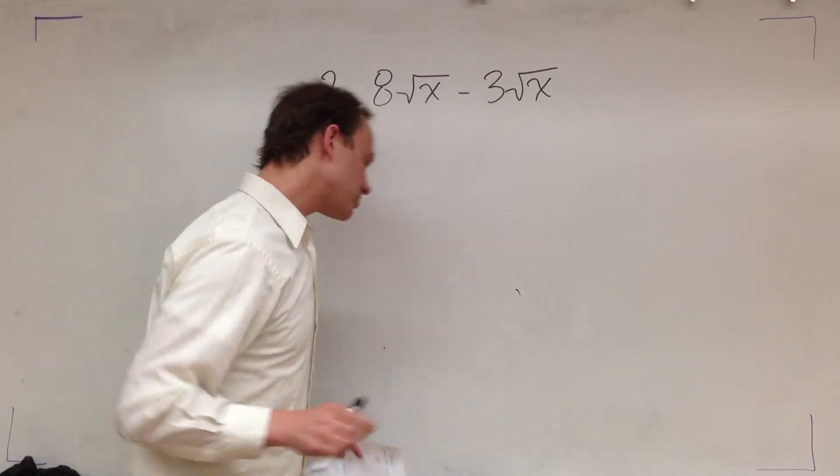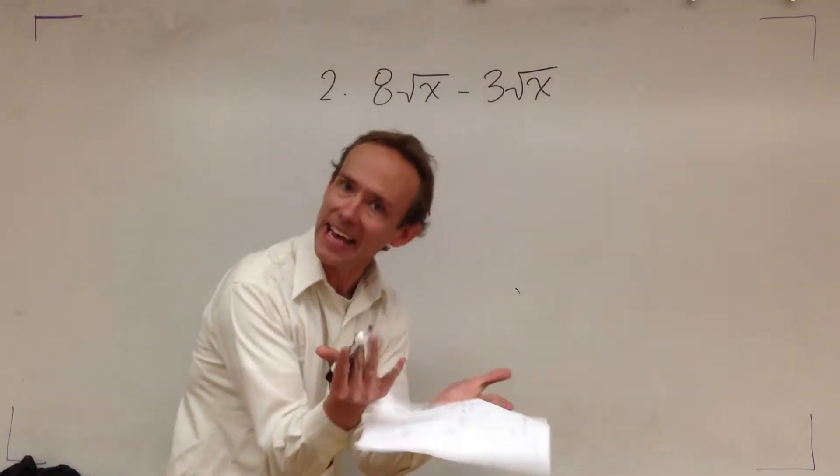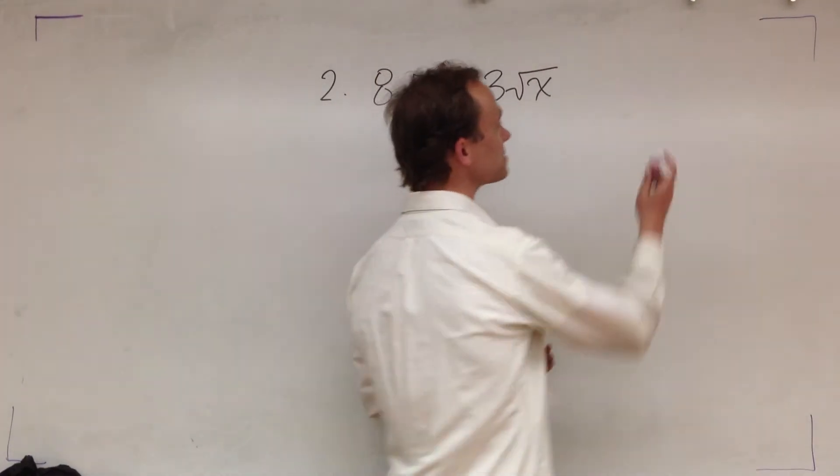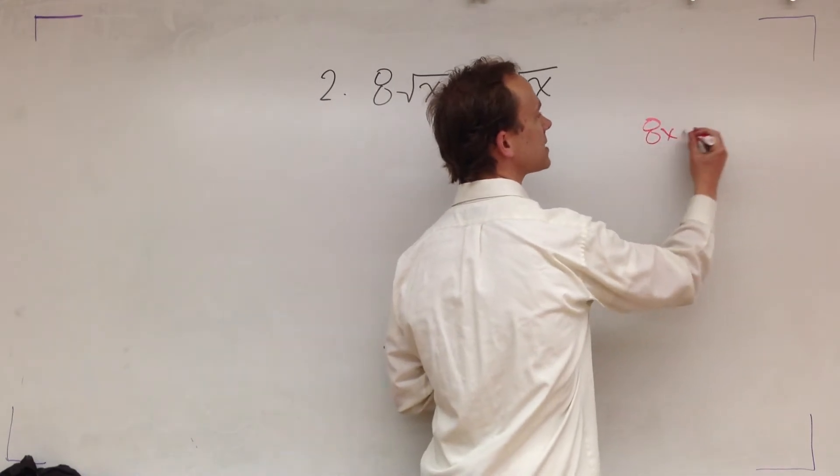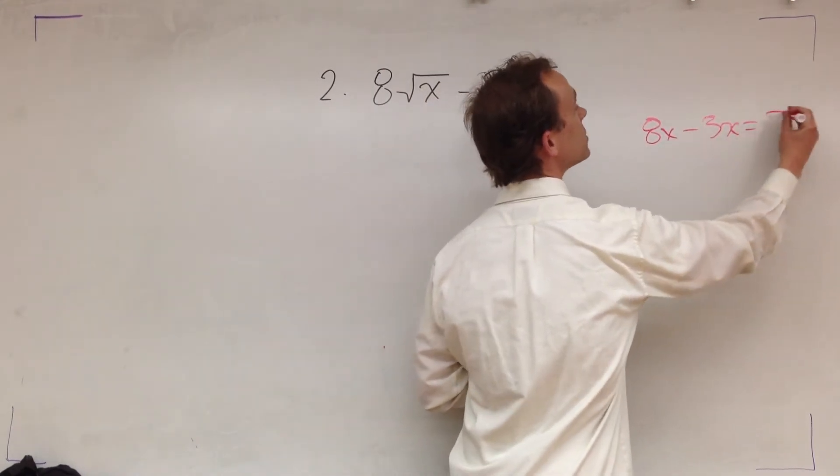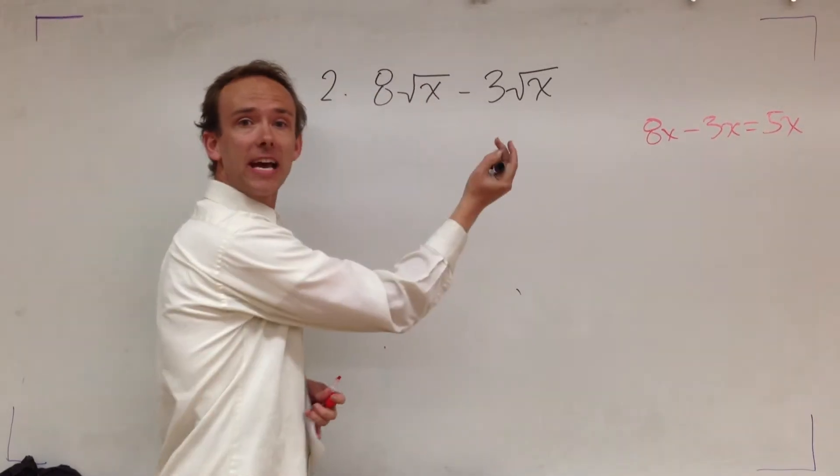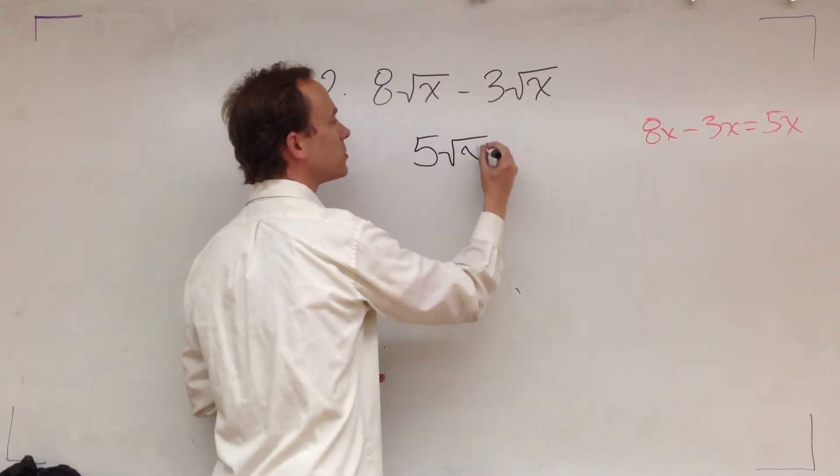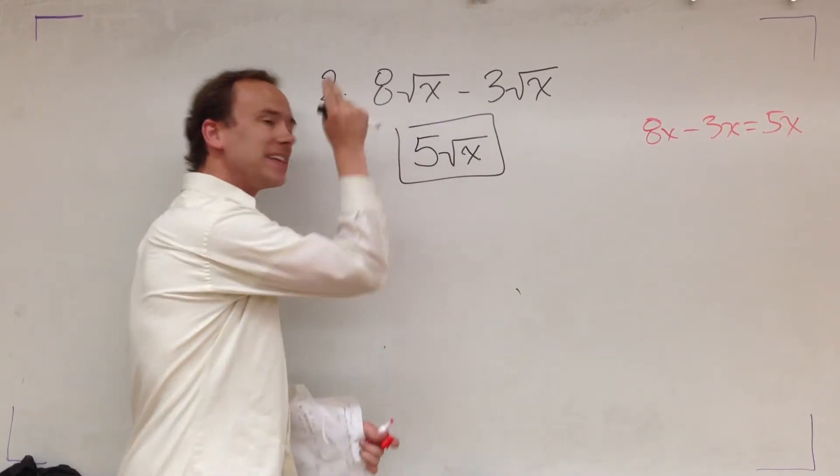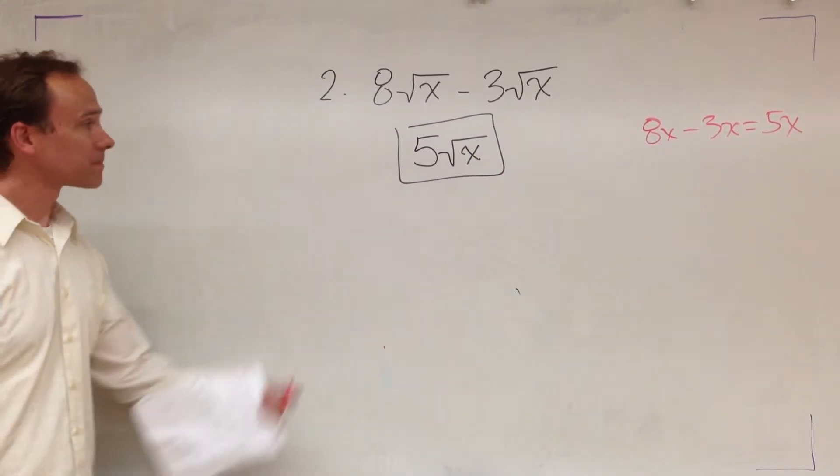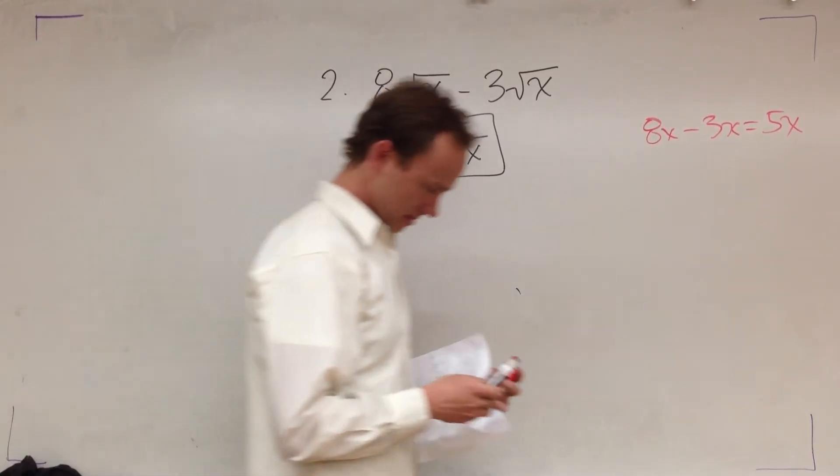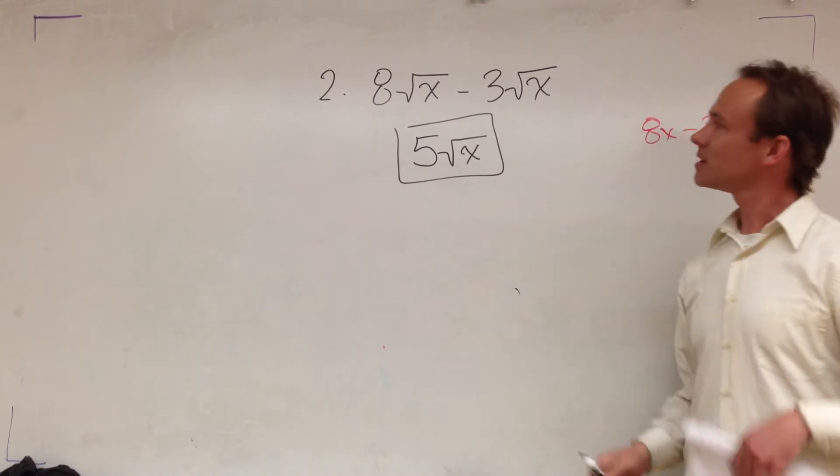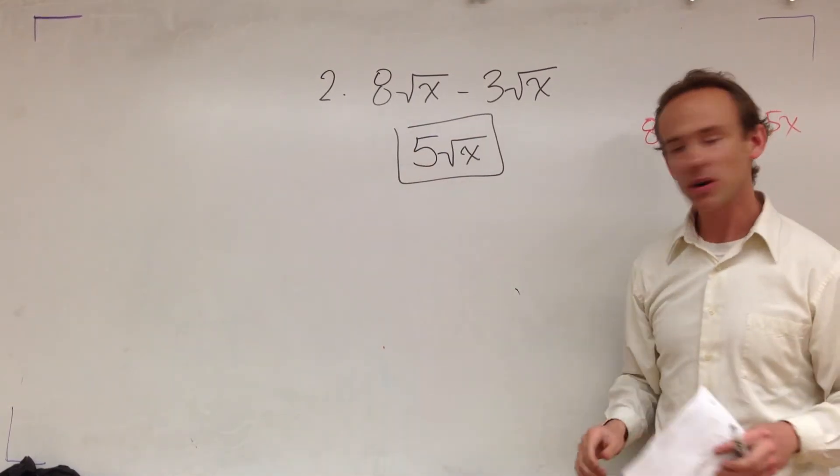So, look. 8 root x minus 3 root x. This is the same, because these are like terms. This ain't no different than if I said 8x minus 3x. 8x minus 3x, which is 5x. You do the same thing. You got 8 minus 3, that gives you 5. You got your root x. You got yourself a problem. Now you're done. Simple as that. And simple may not be the right word. Sometimes I don't use the right word. But it is what it is. That's how you do the problem.